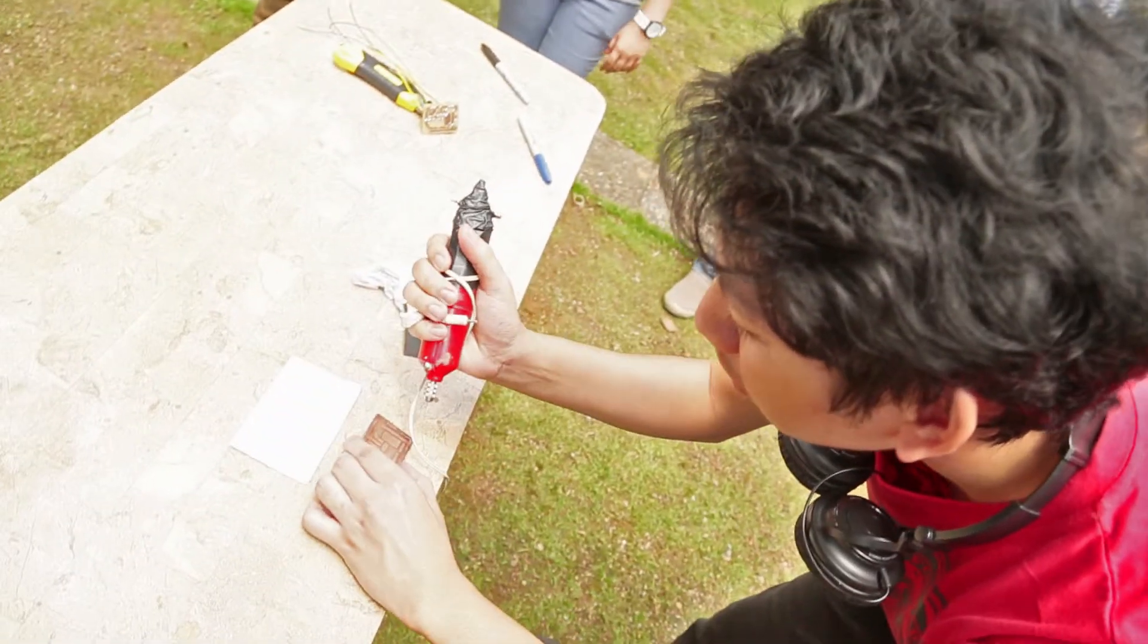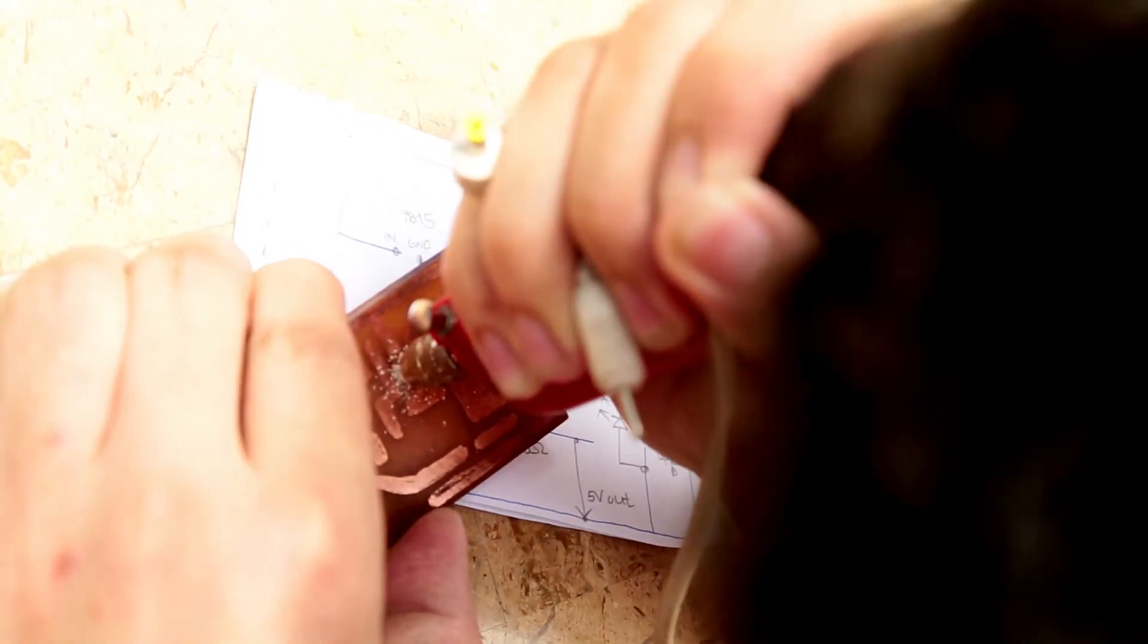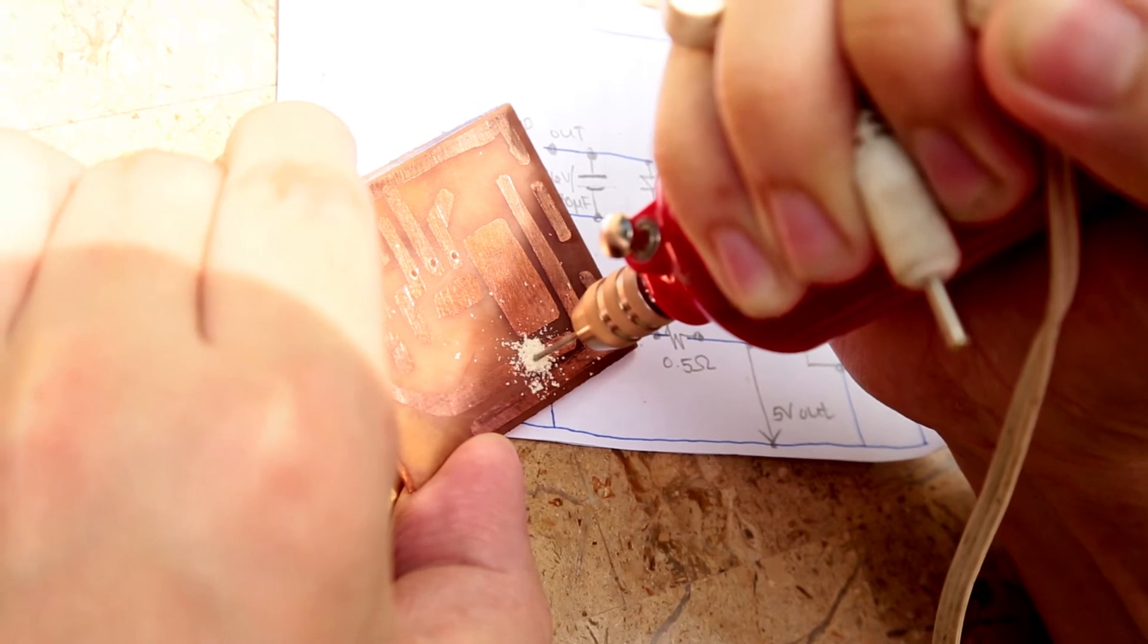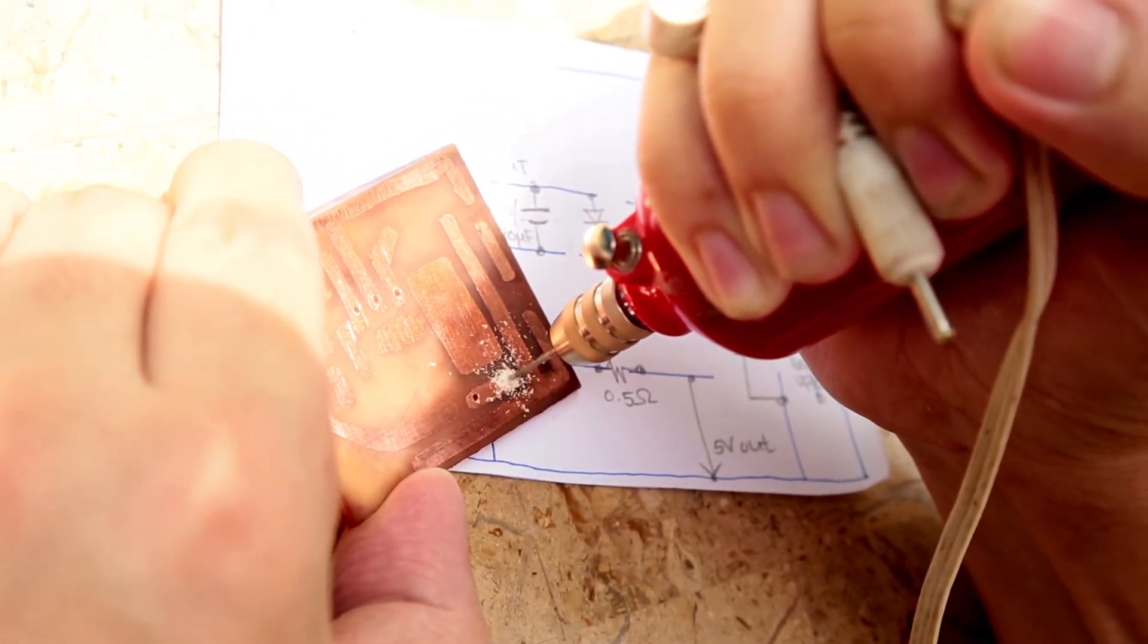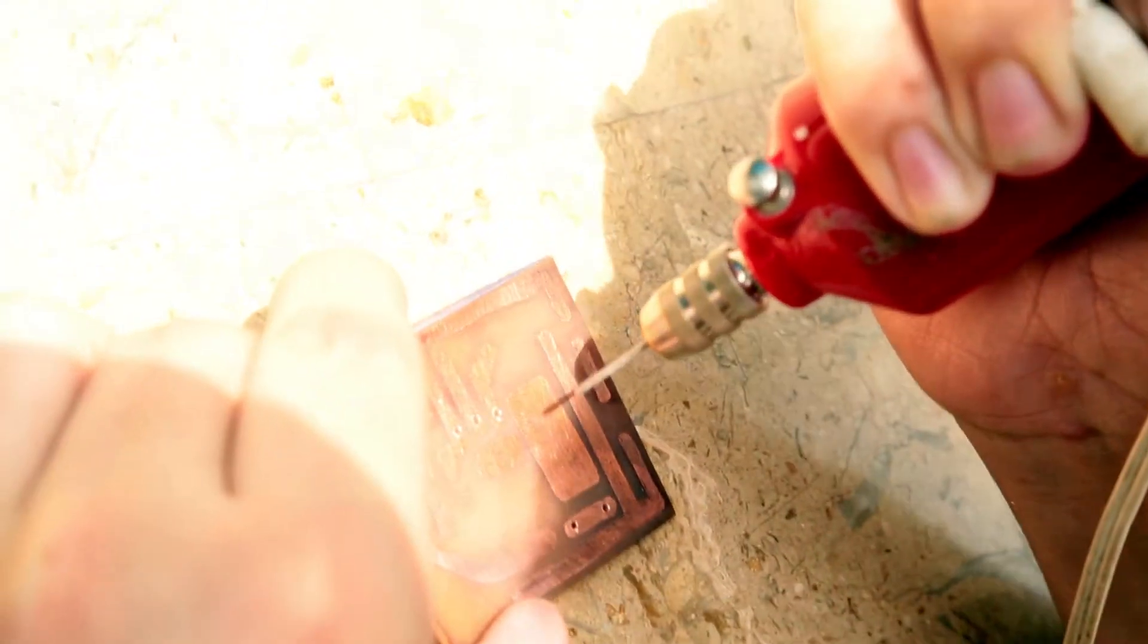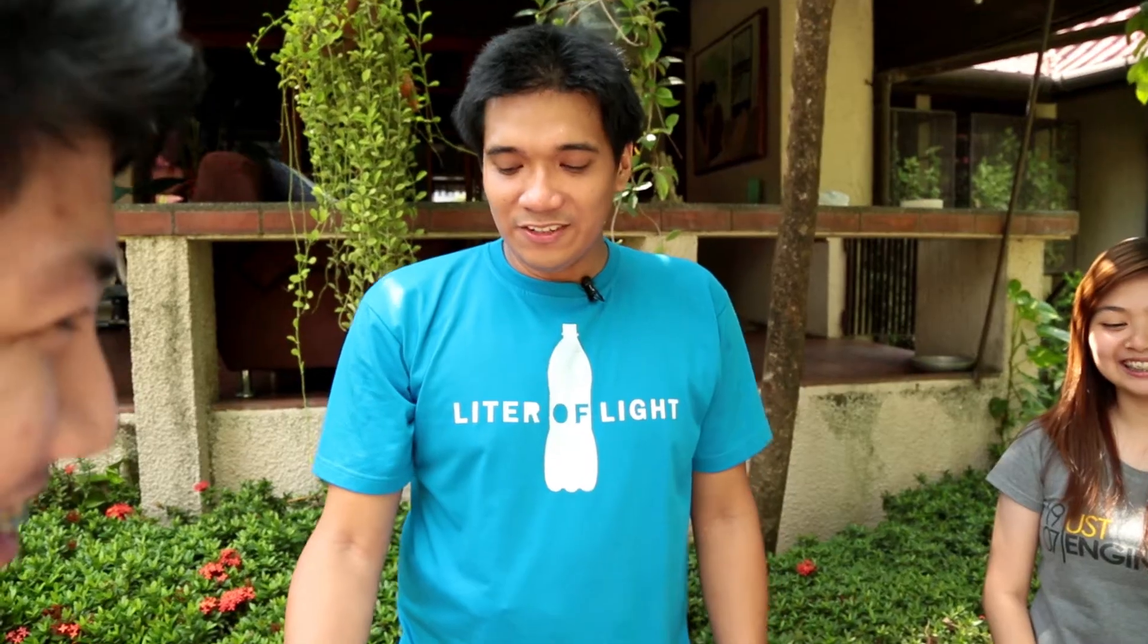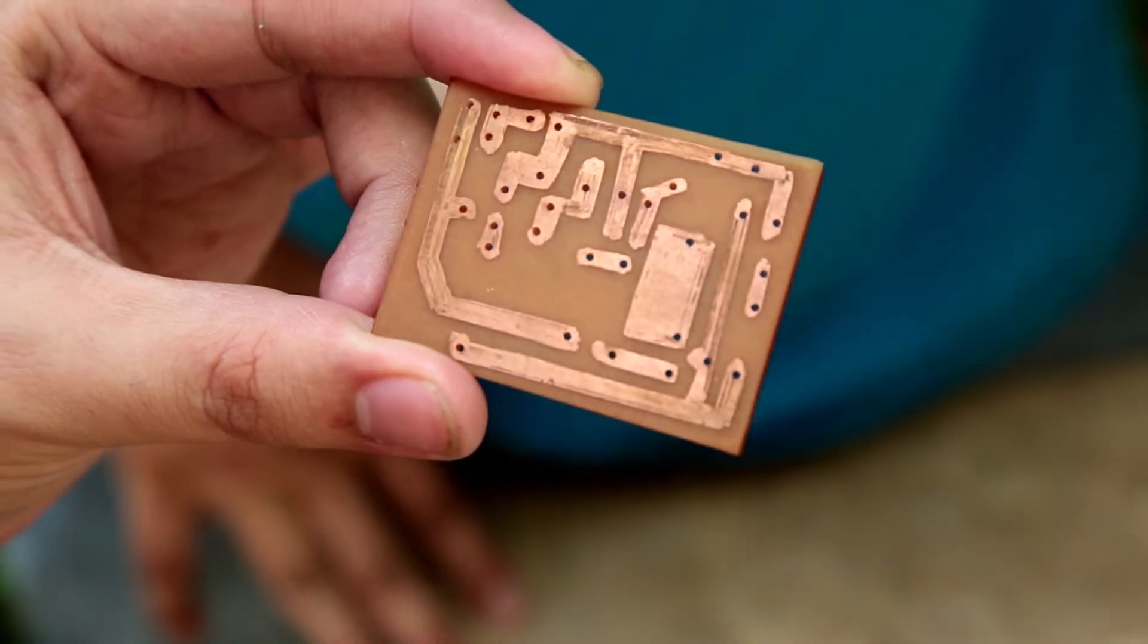We're using 0.8 diameter drill bit. Make sure you're drilling perpendicular to the board. Also make sure you don't completely take out the copper around it, because then you won't have any place to put the solder in. After drilling completely, we have the fully drilled circuit board.